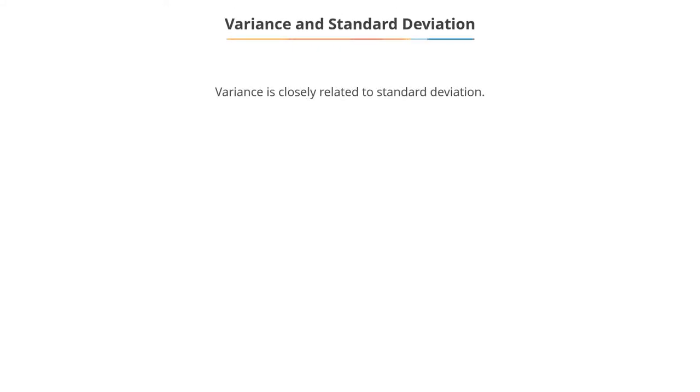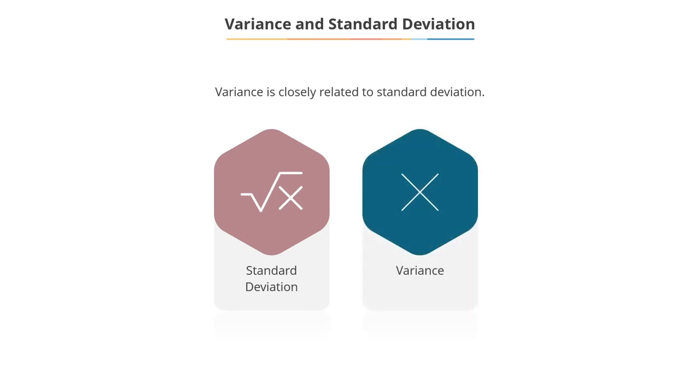Variance is closely related to standard deviation. The difference between the two is that standard deviation involves the use of square root in the calculations.